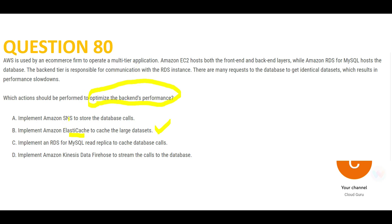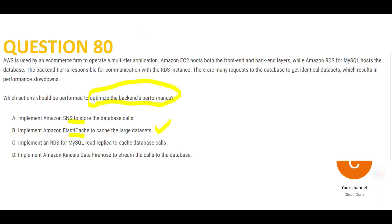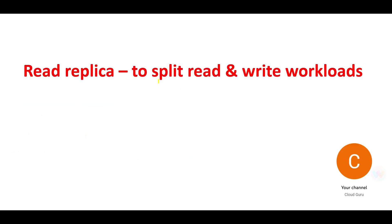Let's scan through the other options. SNS — if you see emails or alerts in the question, you use SNS. Does this question mention that? No. So outright reject SNS.